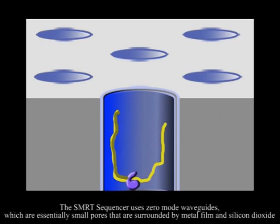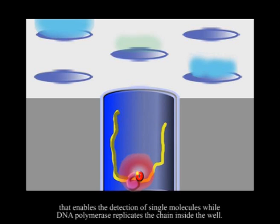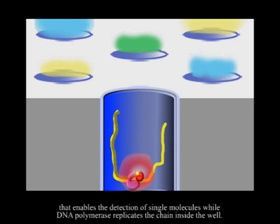The SMRT sequencer uses zero-mode waveguides, which are essentially small pores that are surrounded by metal film and silicon dioxide that enables the detection of single molecules while DNA polymerase replicates the chain inside the well.